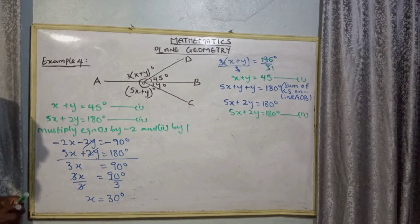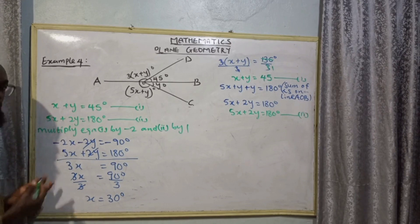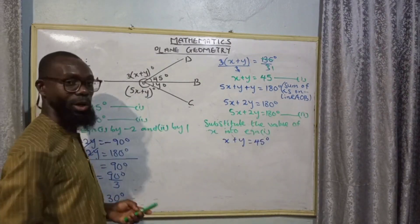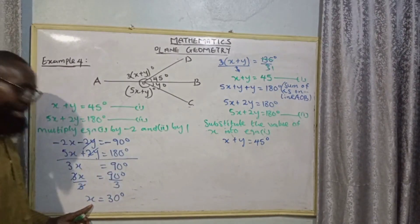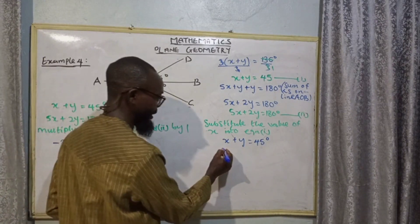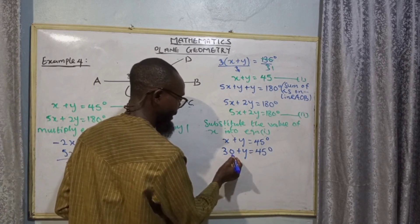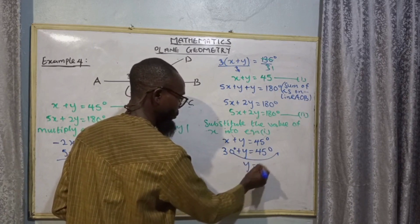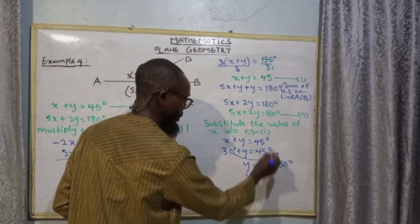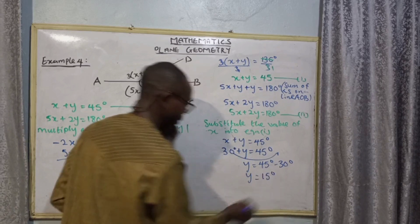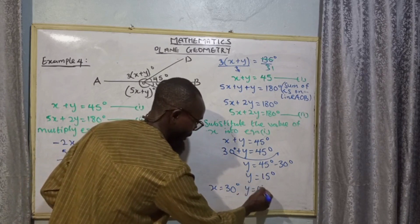So the value of x is 30 degrees. Now let me substitute x into equation 1: x + y = 45. Substituting 30: 30 + y = 45. So y = 45 minus 30. Y equals 15 degrees. So when x is 30 degrees, our y equals 15 degrees.